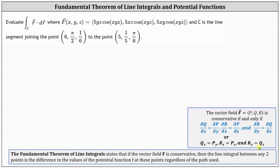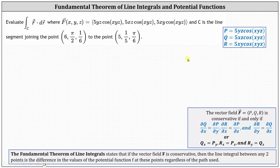To be consistent with our notes, looking at the given vector field, notice p is equal to 5yz cosine(xyz), q equals 5xz cosine(xyz), and r equals 5xy cosine(xyz).